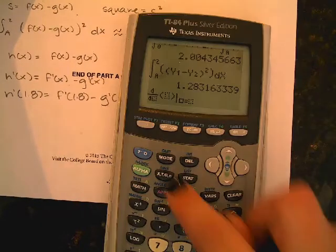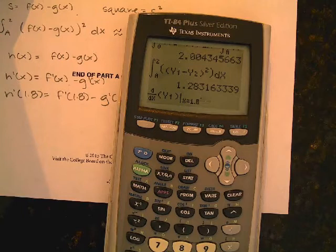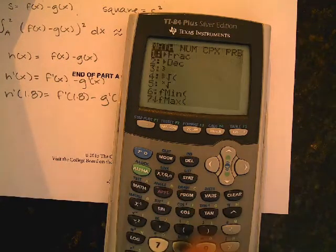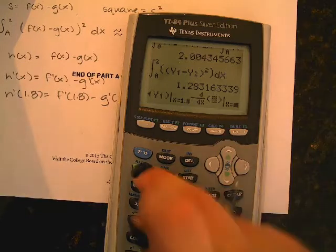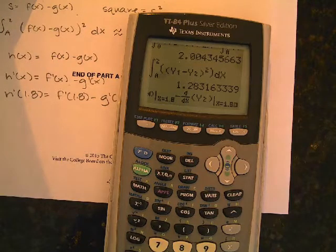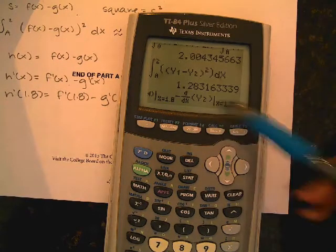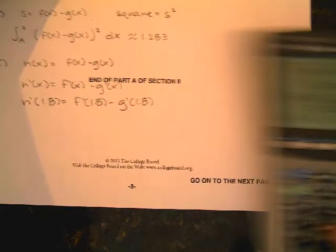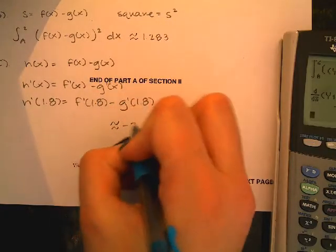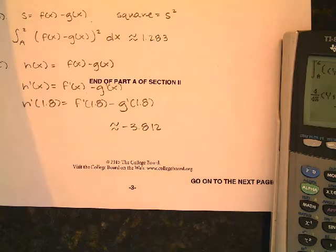So F was Y1. So I'm going to hit math 8, variables X, and I'm going to do Y1 at 1.8 minus math 8, X, Y2. Okay. So we're doing F prime at 1.8 minus G prime at 1.8, and we get negative 3.812. So pretty simple, straightforward problem if you know how to use your calculator and can type everything in correctly.